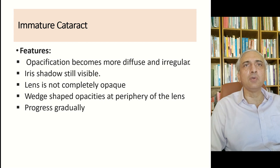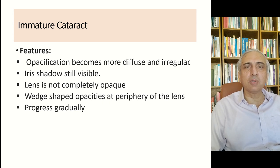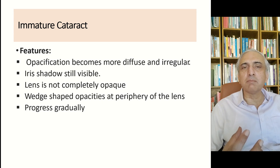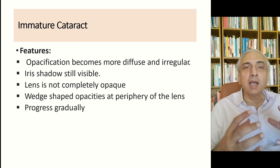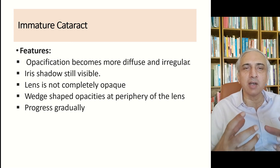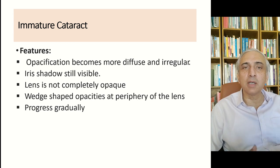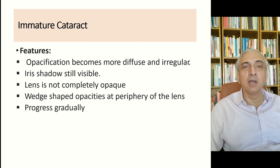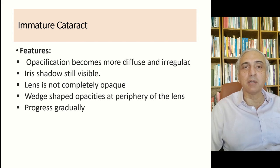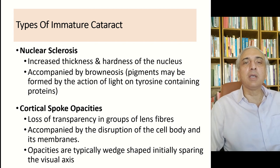In an immature cataract, opacifications become more diffuse and irregular, the iris shadow is still visible, the lens is not completely opaque, wedge-shaped opacities appear in the periphery and progress gradually. Previously, surgery was delayed until the cataract 'ripened.' In local dialect this was called 'motia pakya hai.' Cataract is called 'safaid motia' while glaucoma is 'kala motia,' so differentiating these in history-taking is important.